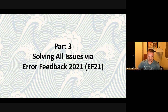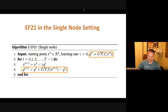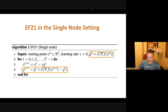We solve all of these issues — both the assumption issues and the rates issues — through something we call EF21. It's a very simple method: you compress the difference between the gradient of f at x_{t+1} at the current point, minus the previous estimate of the gradient, and add the compressed difference to g_t. You can very easily parallelize this by putting subscripts i everywhere, and that is EF21. It is actually equivalent to error feedback if C is additive, positively homogeneous, and deterministic, which is not the case in practice.